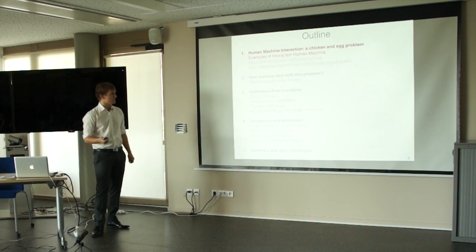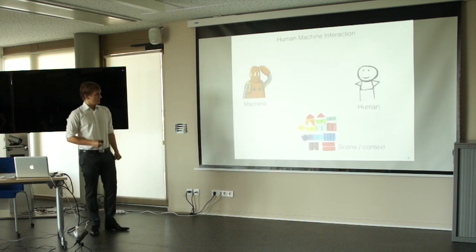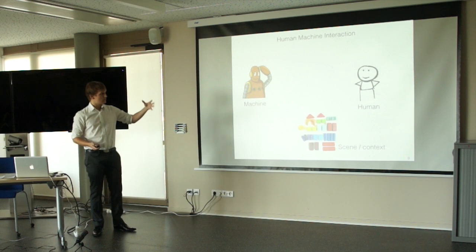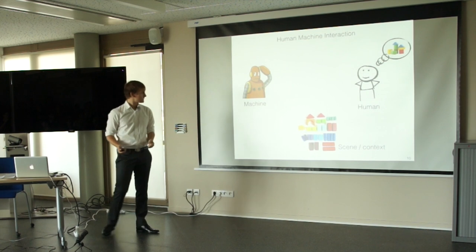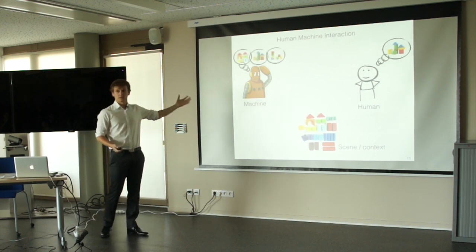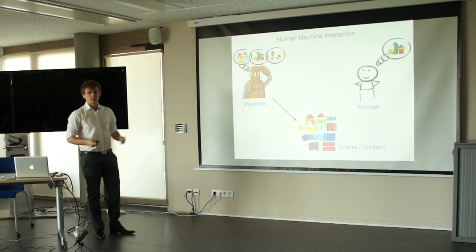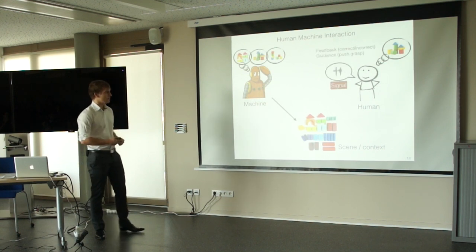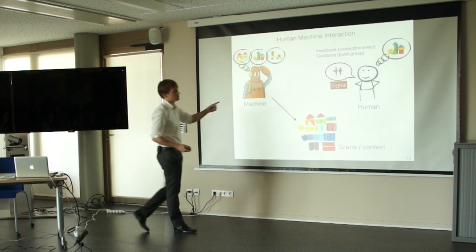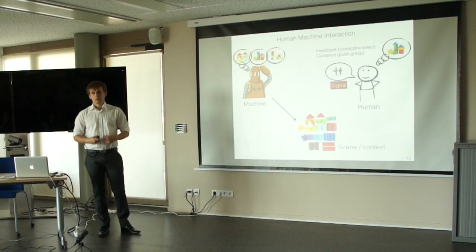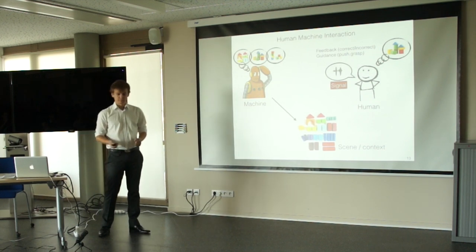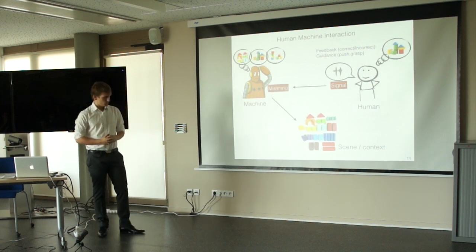Let's start with an example of interaction. In a human-machine interaction, you typically have a human, a machine, and a context. In this case, you have a human that wants the robot to do something with some cubes — for example, building a construction. The goal of the machine is to understand what the human wants it to do. To do that, the machine will interact with the system and receive some information from the human — a communicative signal — which may be feedback saying the action was good or bad, or guidance telling the robot what to do. The problem is to translate this signal into a meaning.